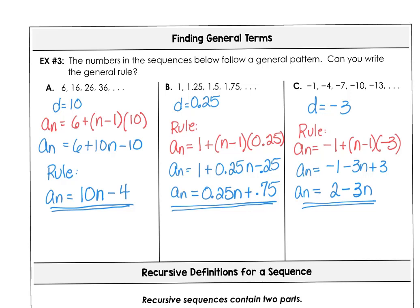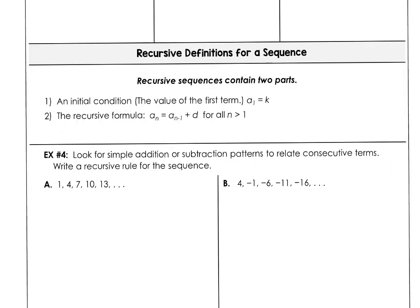So finding general terms and writing that nth term explicit rule is easy. Next, let's look at recursive definitions. They're a little more cumbersome because we have to start with some initial condition — that's our a sub 1 term — and then use the recursive formula where each term uses the previous term plus the difference. In the pattern 1, 4, 7, 10, we have a difference of 3. Our a sub 1 term is 1. A recursive formula is written in two parts: the initial condition and then the recursive part.